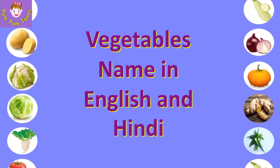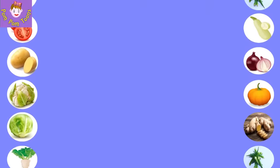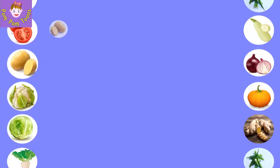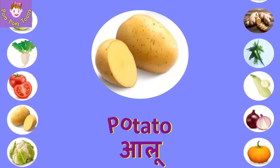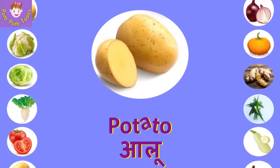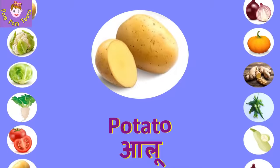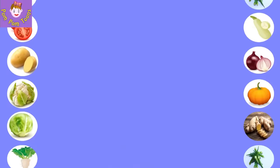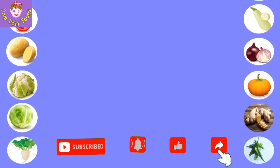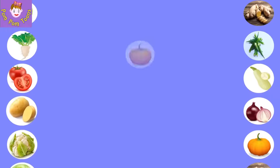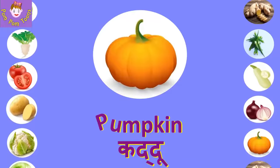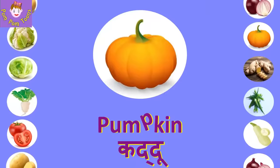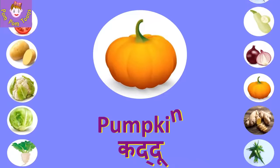Vegetable names in English and Hindi. P-O-T-A-T-O, Potato, Alu. P-U-M-P-K-I-N, Pumpkin, Kaddu.